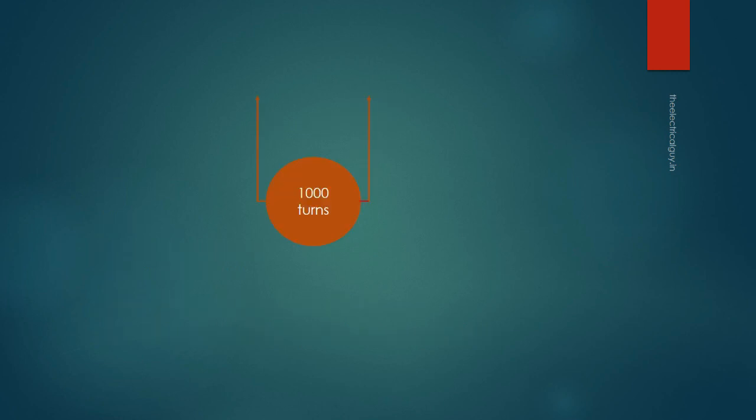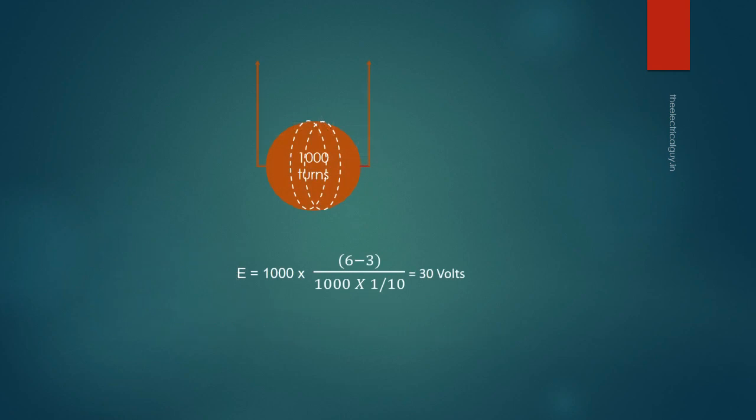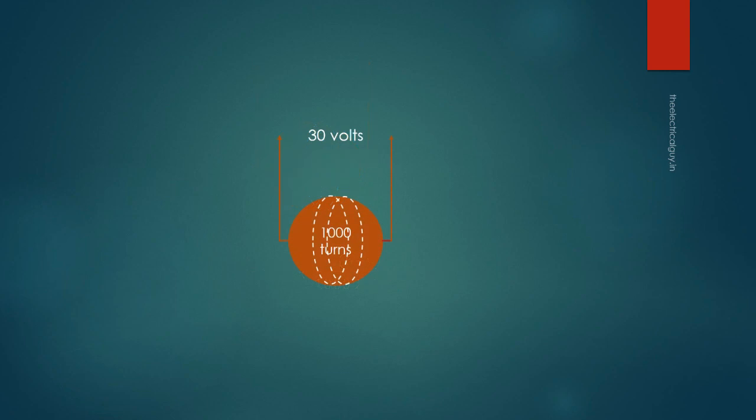Let's take an example. You have a coil with 1000 turn which is surrounded by a flux of 6 mW produced by a permanent magnet as shown in the figure. Now the magnet is suddenly moved and the flux inside the coil reduced to 3 mW. What will be the voltage induced? So we can use this formula to find out the total amount of voltage induced. If you do the calculation, you will find that the total amount of voltage generated is 30 volts. And this proves the law of electromagnetic induction.